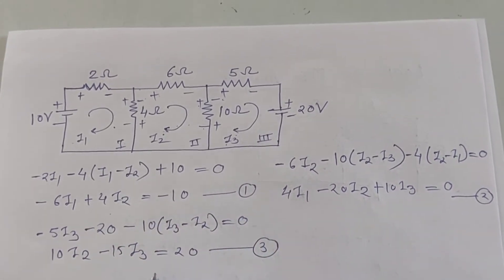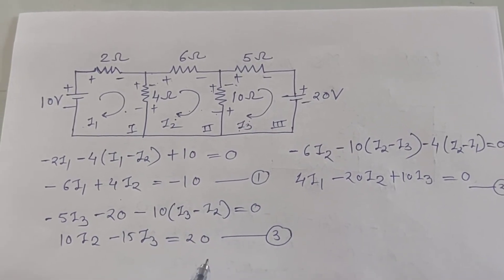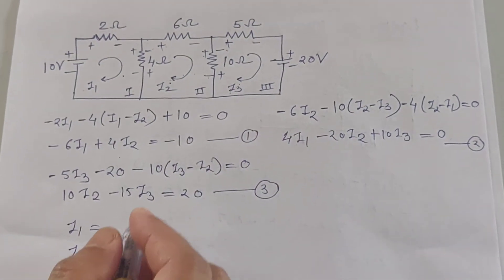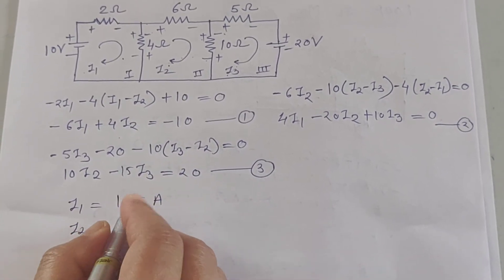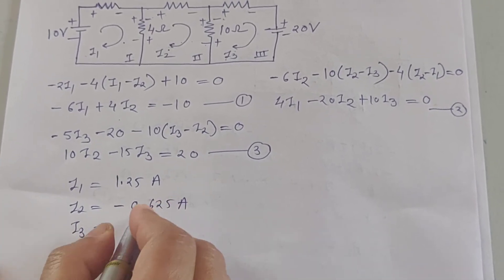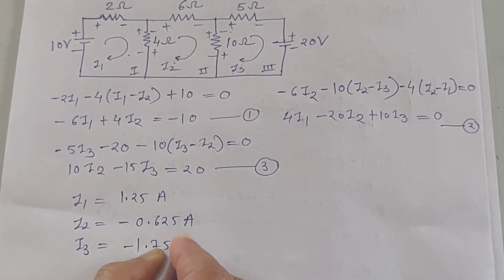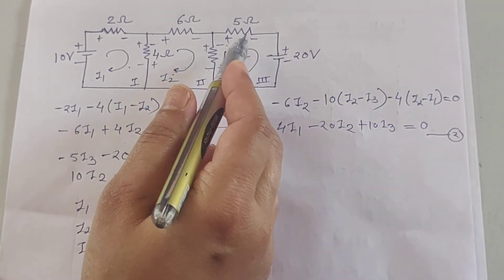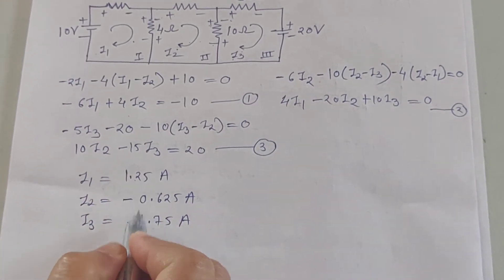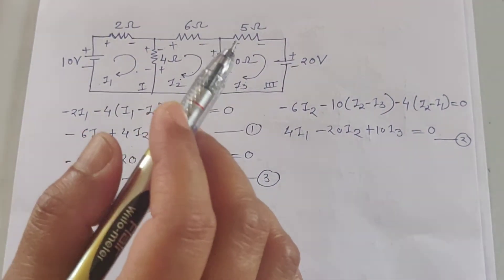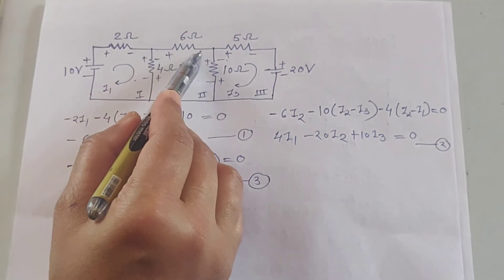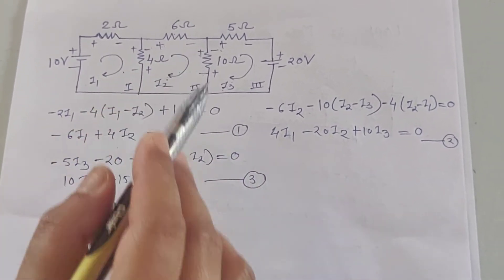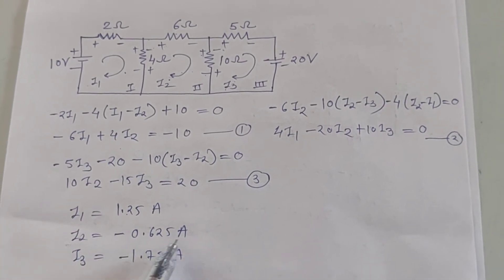We now have three simultaneous equations. Solving them gives the loop currents: I1 equals 1.25 amperes, I2 equals minus 0.625 amperes, and I3 equals minus 1.75 amperes. The negative sign indicates the assumed direction is wrong, not that the answer is wrong. If only the current through the 6-ohm resistor is needed, you only need to find I2.